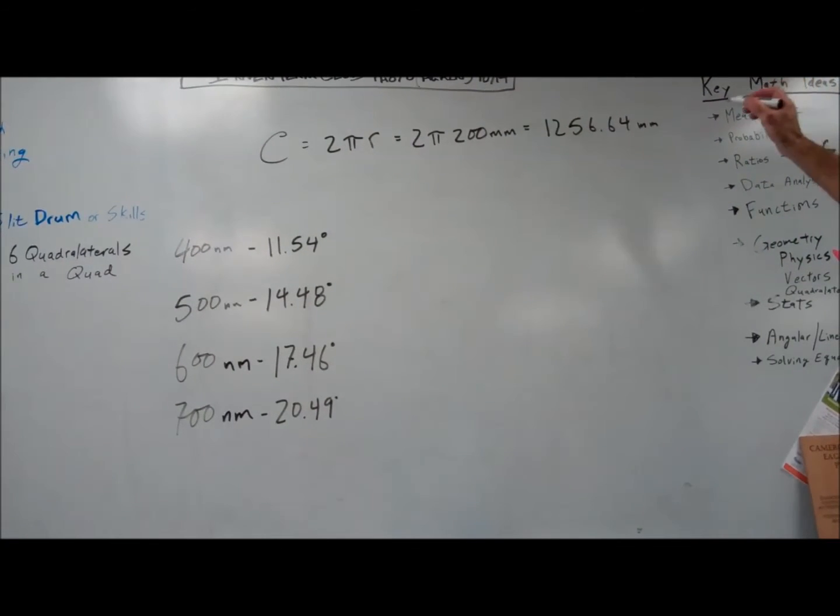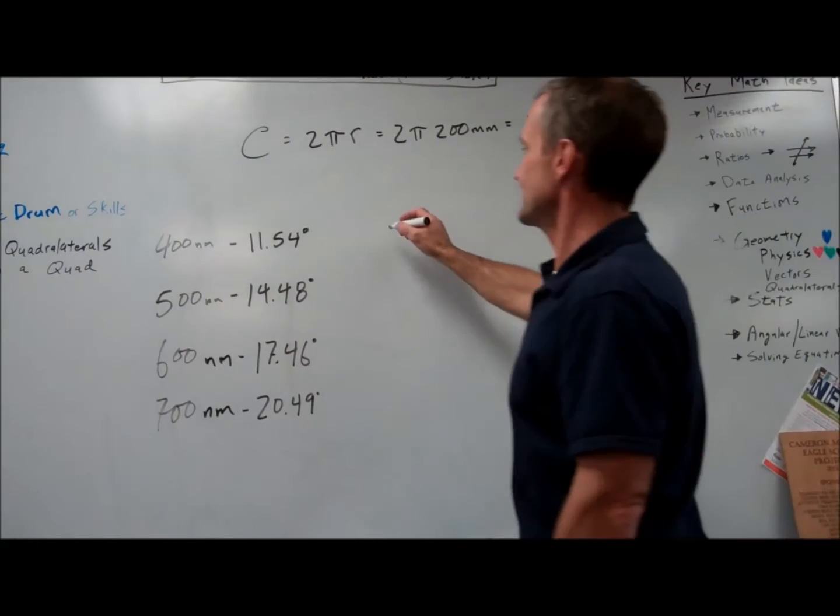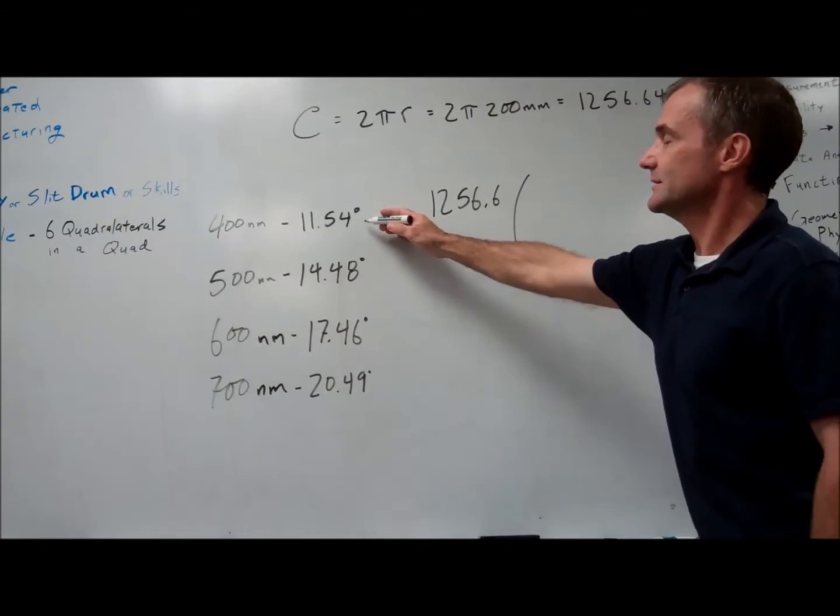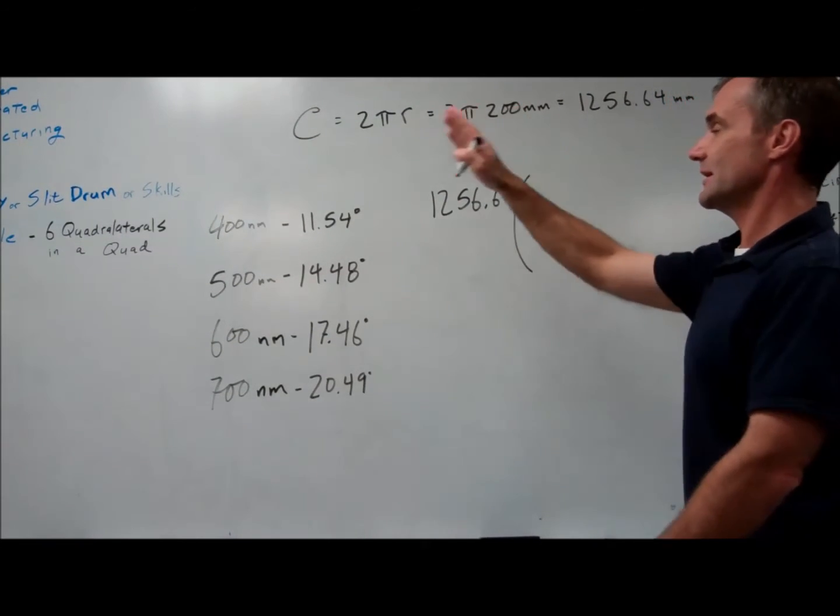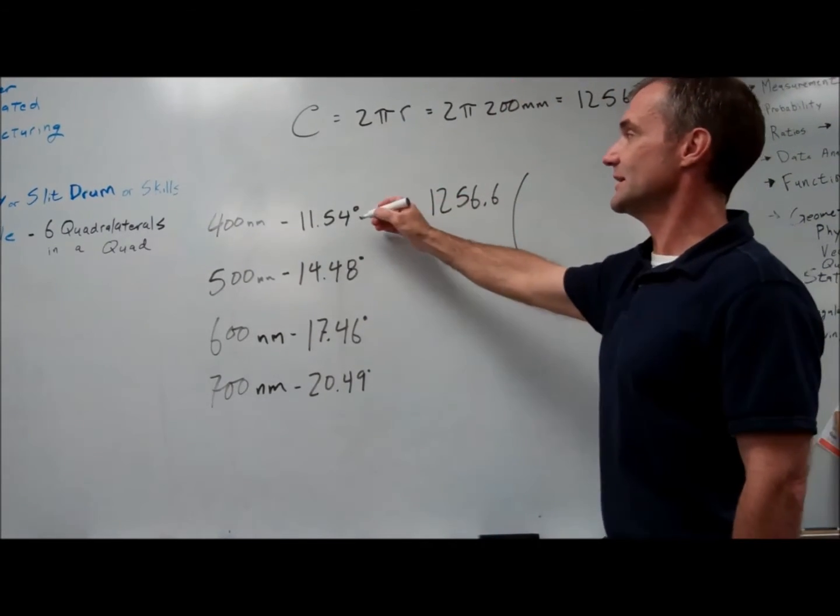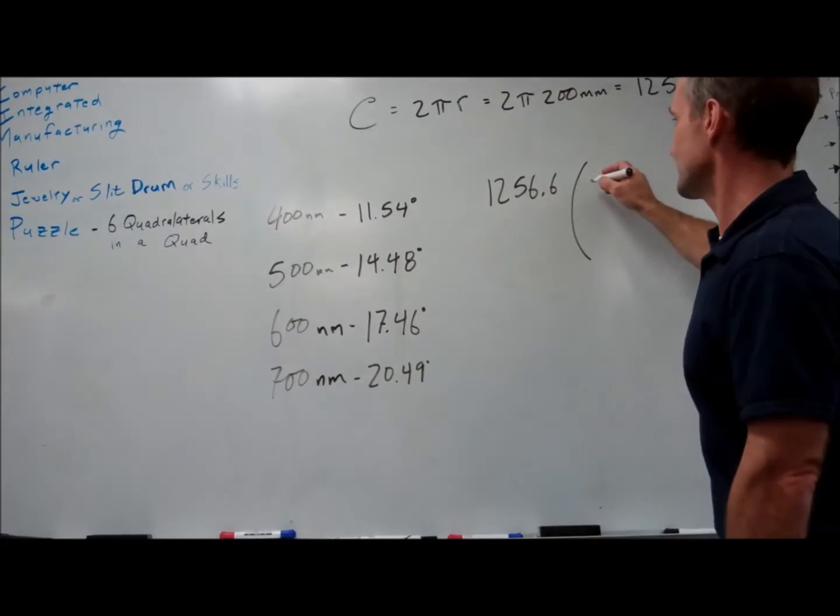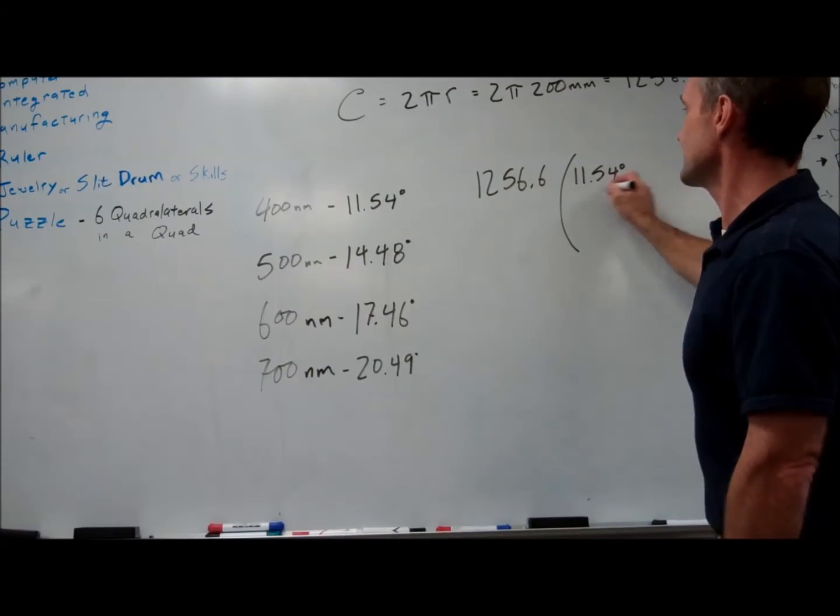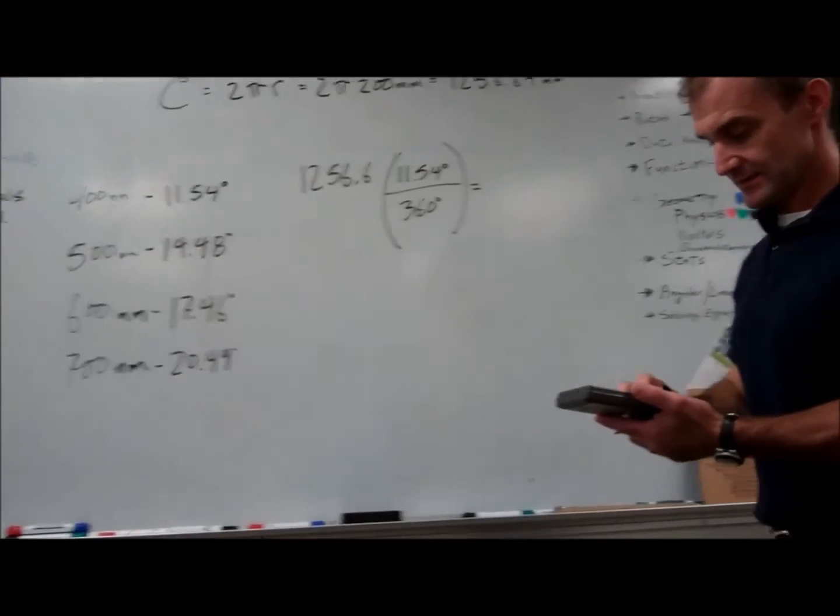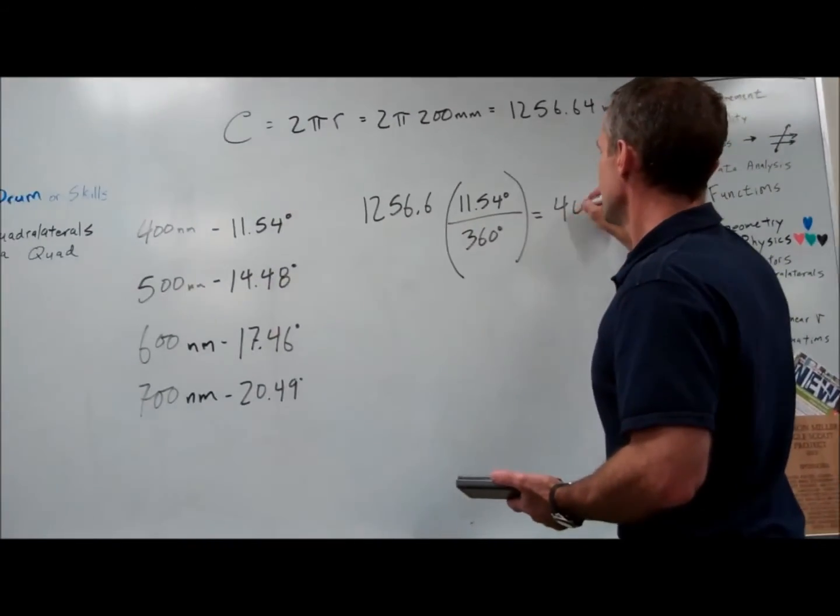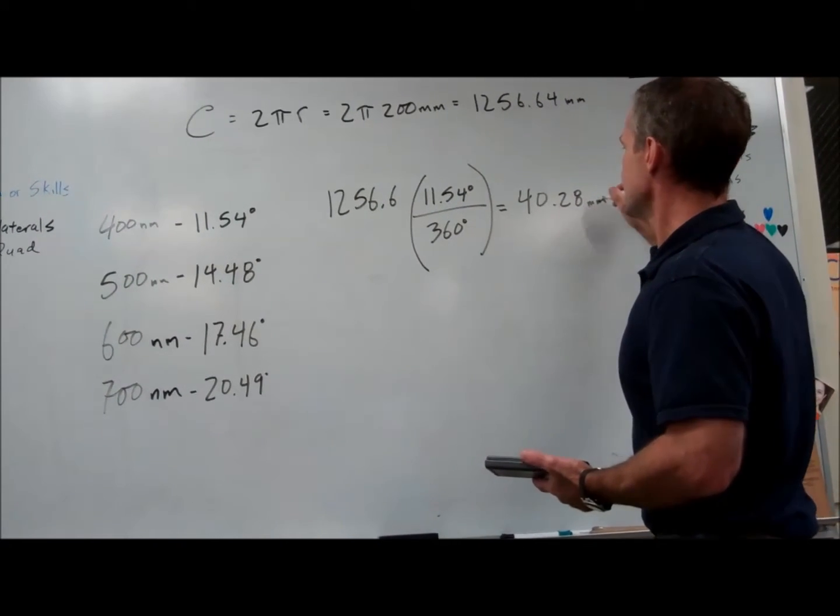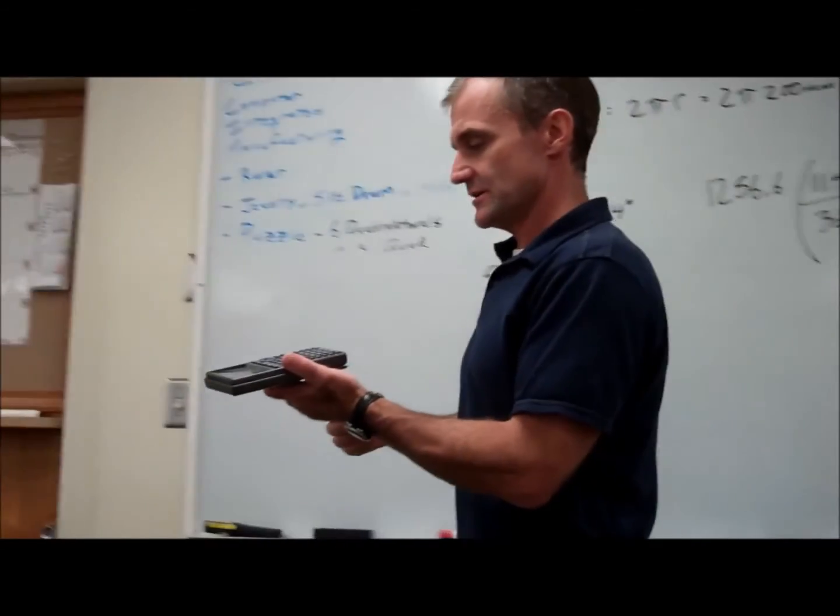So I take that circumference and I multiply by the ratio of what I want over the total. So I know I don't want to go 360 degrees - that's a full revolution. I only want 11.54 of the 360 degrees, so I do 11.54 degrees over the total of 360 degrees, and then that gives me 40.28 millimeters. So that's how far over I go.